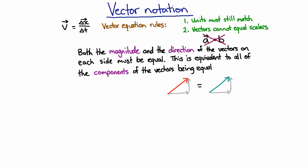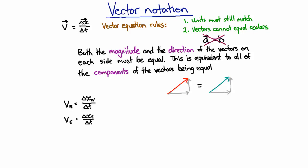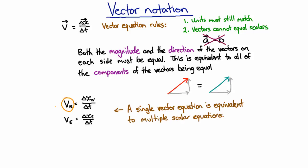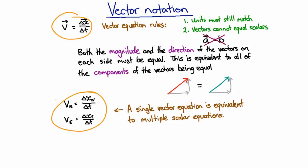For our velocity definition, we can say that the velocity in the north direction is equal to the change in position in the north direction divided by the time taken. And the velocity in the east direction is equal to the change in position in the east direction divided by the time taken. So one vector equation is equivalent to multiple scalar equations — or three scalar equations if we include the vertical direction.